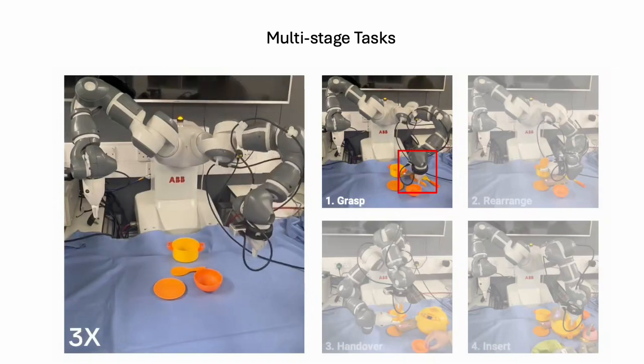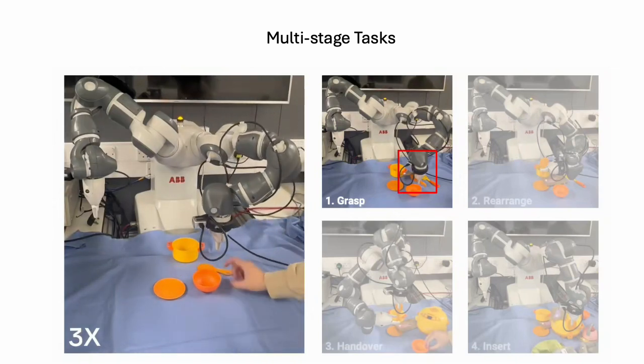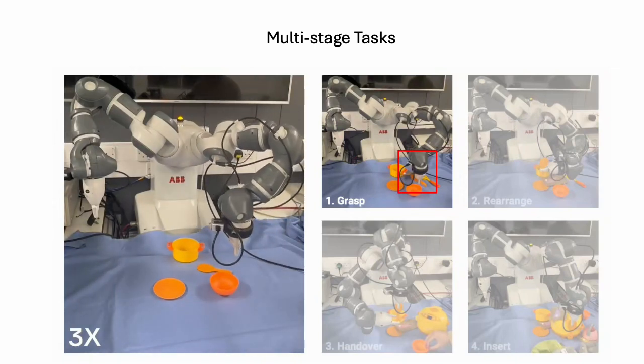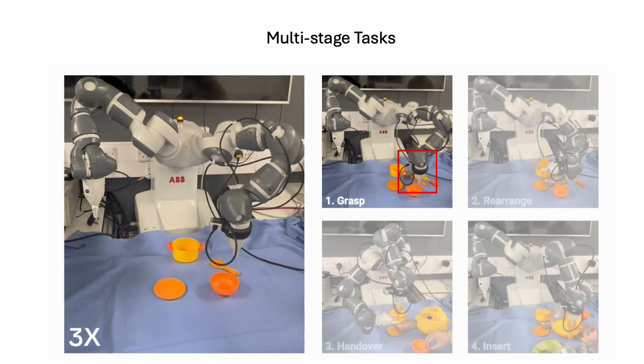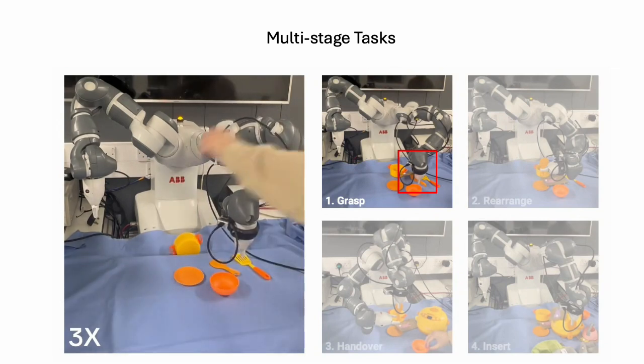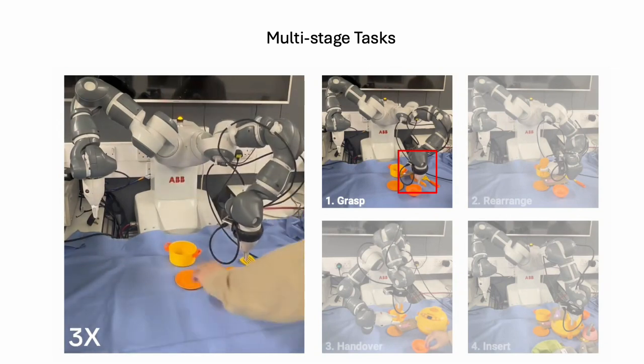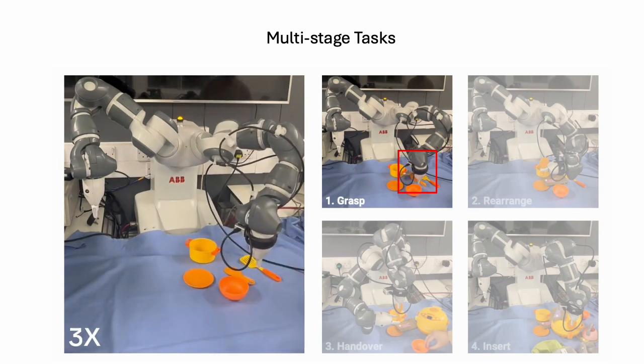Our method extends to multi-stage dual-arm tasks by chaining multiple bottleneck images. Here, we demonstrate a multi-stage task learned from a single demonstration. The robot grasps a rice pedal, rearranges, hands it over, and inserts it into a rice cooker holder.